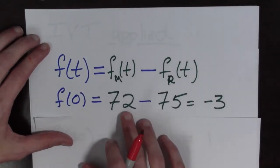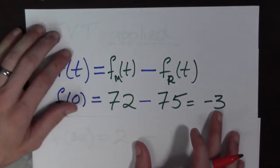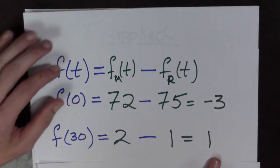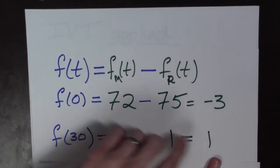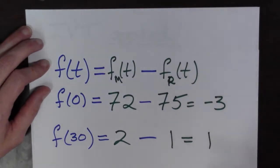And now f(0) is equal to 72 - 75, which is -3, and f(30) is 2 - 1, which is 1. Okay, well how does this help us exactly? Well, let's see the Intermediate Value Theorem applied to this function f.